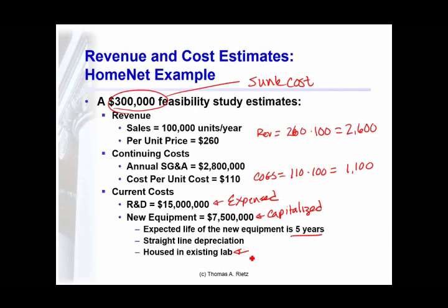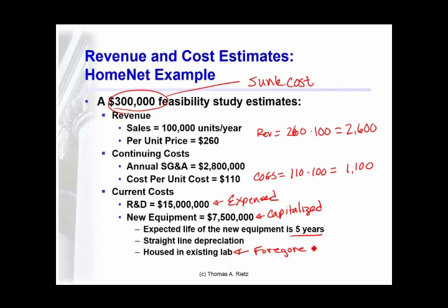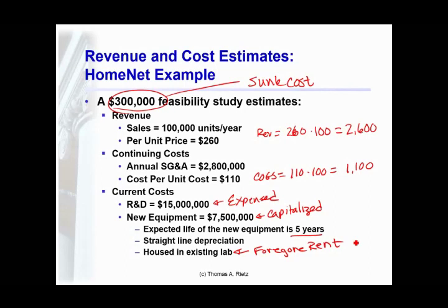Second, in terms of housing in an existing lab — if they could have leased that space out, they'll have foregone rent. If they choose to do the project or not, it will change the amount of rent they receive on this space. So that's going to create an opportunity cost not directly incorporated in the initial cash flows. Finally, beyond the simple sales and revenue of this particular router, this router may cannibalize — reduce the sales of existing routers by Cisco. We'll need to capture that in the cash flows as well.